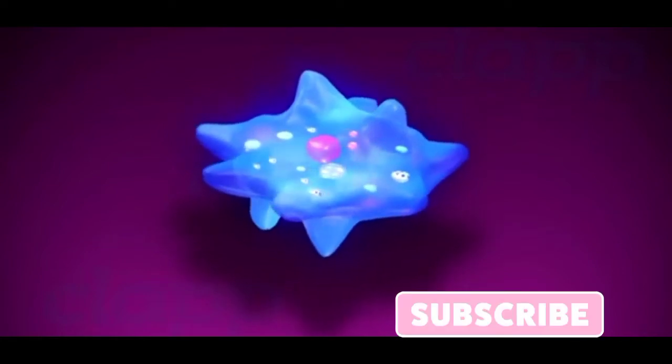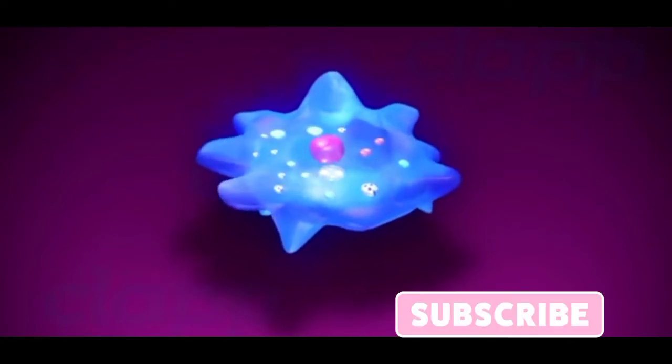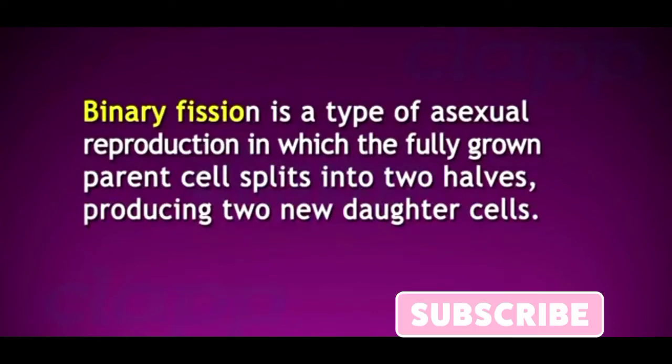Amoeba reproduces asexually by binary fission. Binary fission is a type of asexual reproduction in which the fully grown parent cell splits into two halves, producing two new daughter cells.